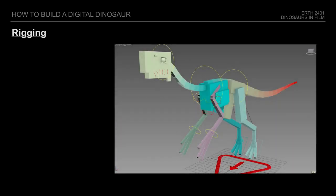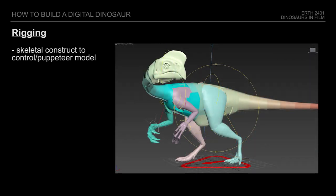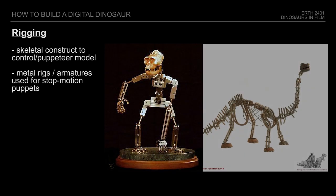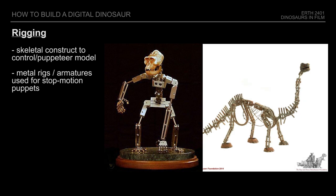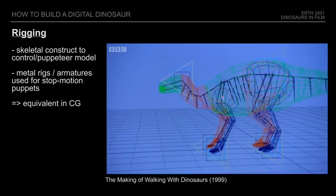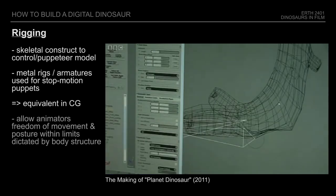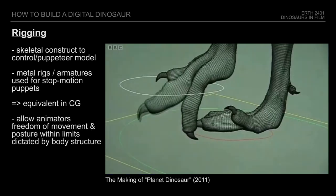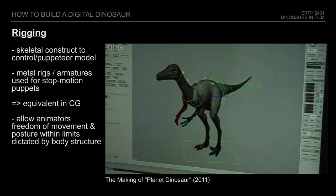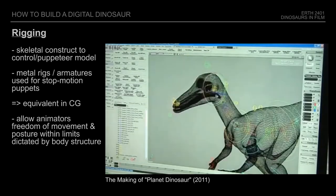The next step is building an interior rig, which serves as a representation of the skeleton in order to puppeteer the model. In the days of stop-motion, a metal armature was created first as an interior structure, over which the rubber skin was grafted. When using CGI, the rig is the digital equivalent, and in a simplified setup the wireframe gets locally constrained to the individual bones. The idea is to give an animator as much control over the model as possible, within the limited range that the body would allow.